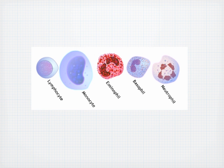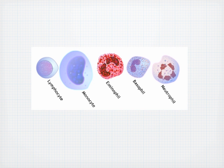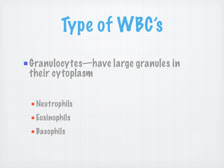There's a slide showing lymphocyte, monocyte, eosinophil, basophil, and neutrophil. My acronym is 'never let monkeys eat bananas,' representing the relative concentration of those cells in the human body. Granulocytes have large granules in their cytoplasm — neutrophils, eosinophils, and basophils. You can see the granular nature and why they're called granulocytes. There's a basophil, a neutrophil, and an eosinophil.